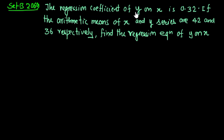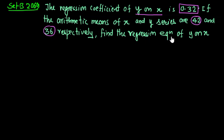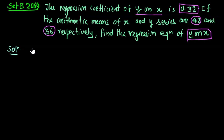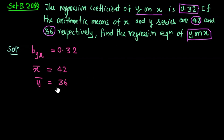Next question: the regression coefficient of y on x is given as 0.32, and the arithmetic means of x and y series are 42 and 36 respectively. So x bar equals 42 and y bar equals 36. Find the regression equation of y on x. The regression coefficient b_yx is 0.32.